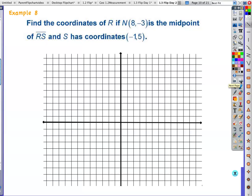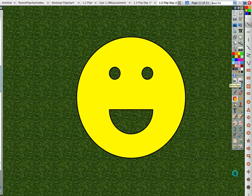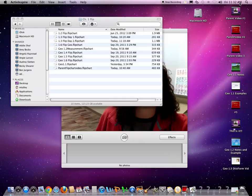All right. This is example 8. Find the coordinates of R if N is the midpoint. It's at (8, -3). And the segment RS has an end point of (-1, 5). And I want you to try this. Okay? You're like, I can't do it. I want you to try it. Okay? And then we can kind of look at this in class and see where we are. All right. See how much you can do by yourself. And that way you'll get a good chance to see what kind of questions you have for me. All right. And that concludes this lesson. This is the second day of 1.3. We're just working on midpoint.